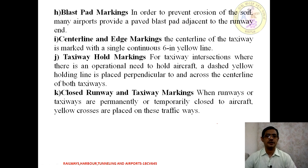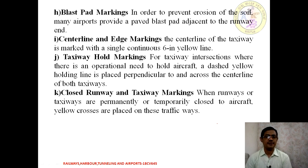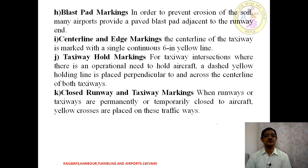Next is the blast pad marking. In order to prevent erosion of soil, many airports are provided with a blast pad adjacent to the end of the runway. Next is the centerline and edge marking — the centerline for the taxiway is marked with a single continuous 6-inch yellow line. Next is taxiway hold marking — at taxiway intersections where there is an operational need to hold an aircraft, a dashed yellow line is placed perpendicular across the centerline of both taxiways, called taxiway hold marking.